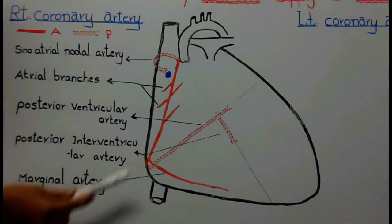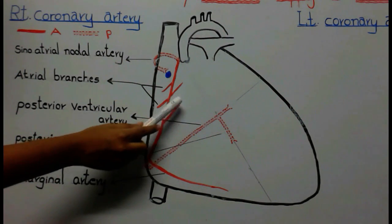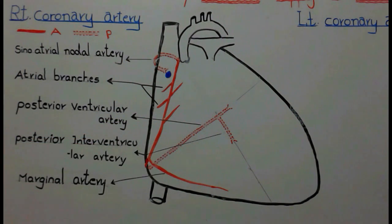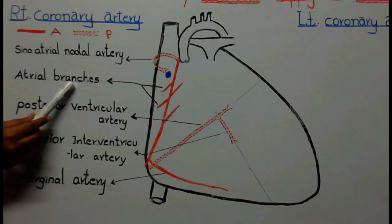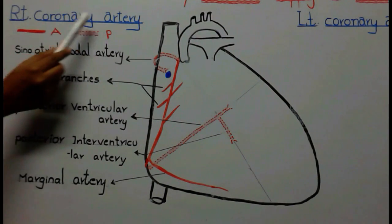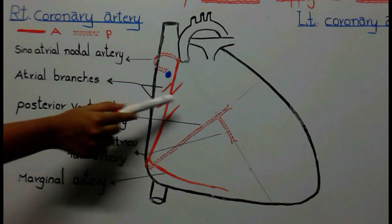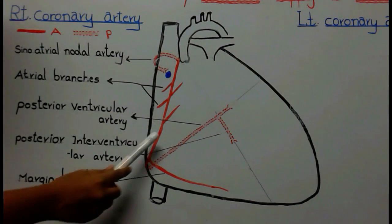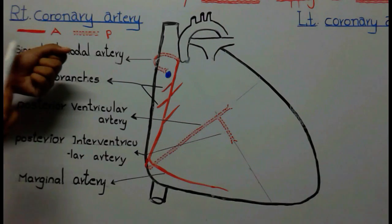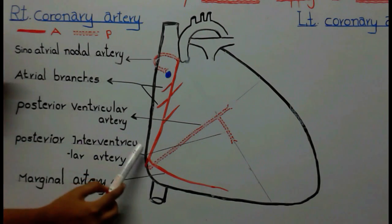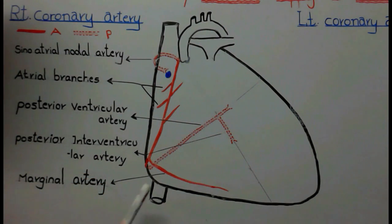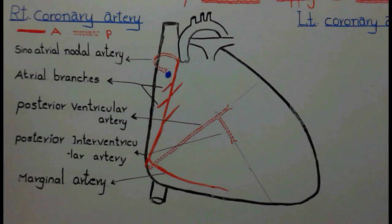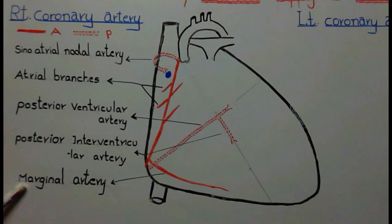This branch is called the sinoatrial nodal artery. After that, the artery descends downwards, giving out many branches called atrial branches of the right coronary artery, as they supply the atrial part of the heart. Before the artery goes backwards, it gives another branch called the marginal artery, named so because it is present near the margin of the heart.